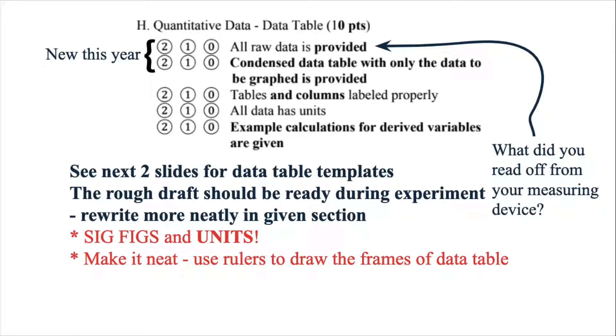Quantitative data is the data table and new this year is that they require all the raw data to be provided as well. And then condensed data table, also the final data that you're going to graph has to be only the part that is going to be graphed. So this is going to be a little interesting and kind of different from what we have done in the past few years, but the core method to nailing this part is still pretty straightforward.